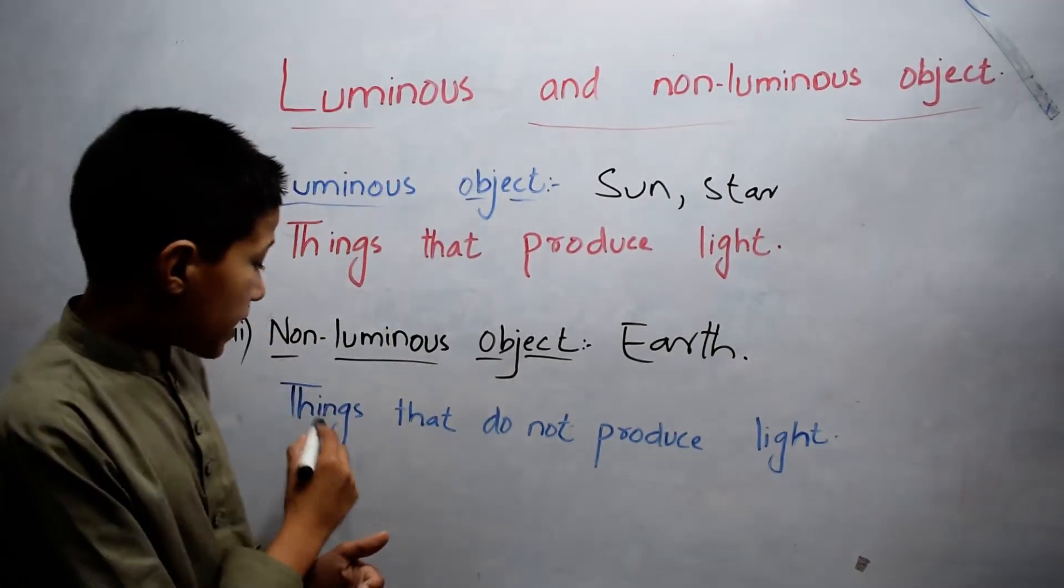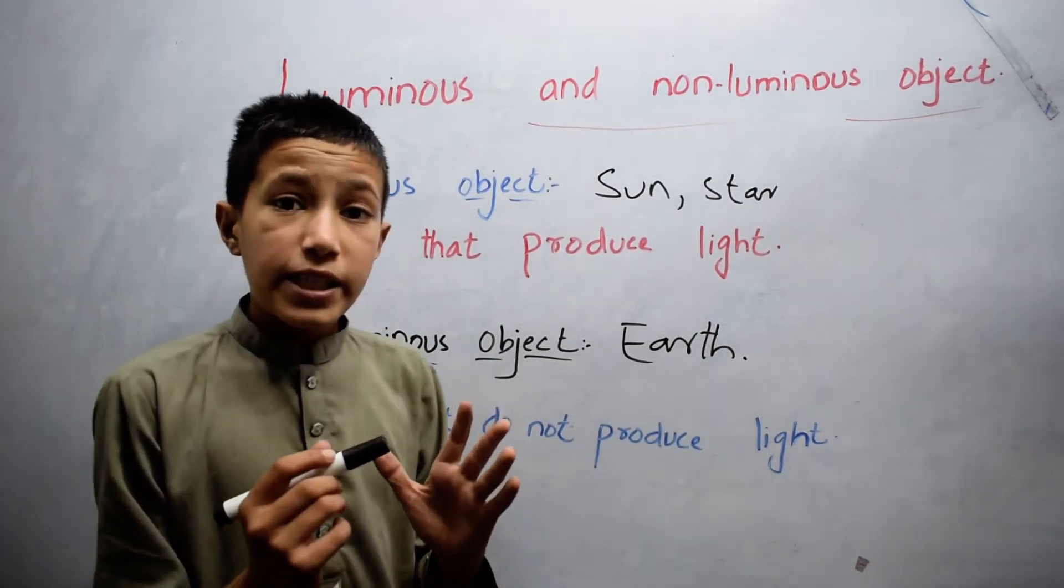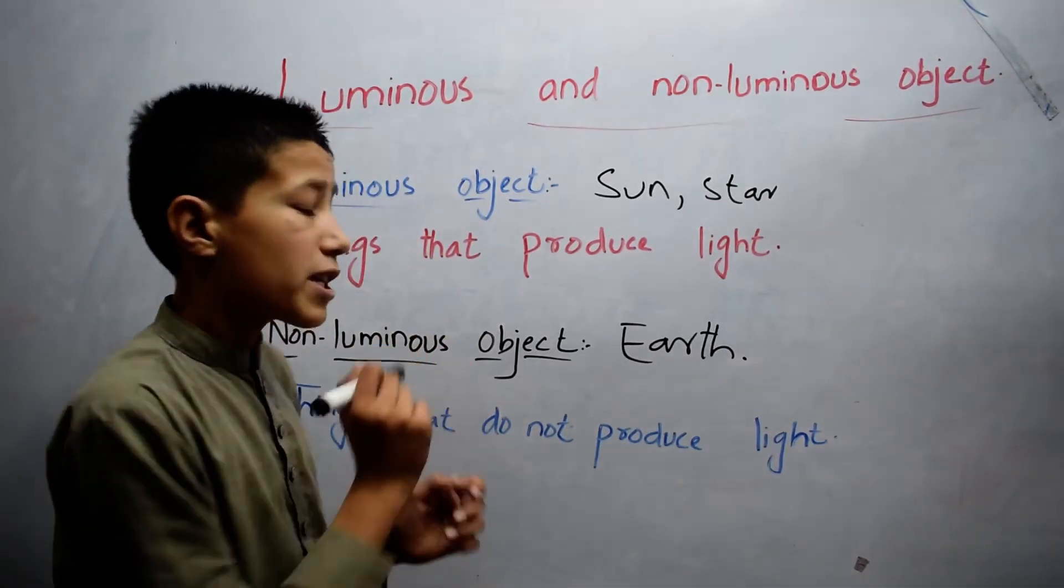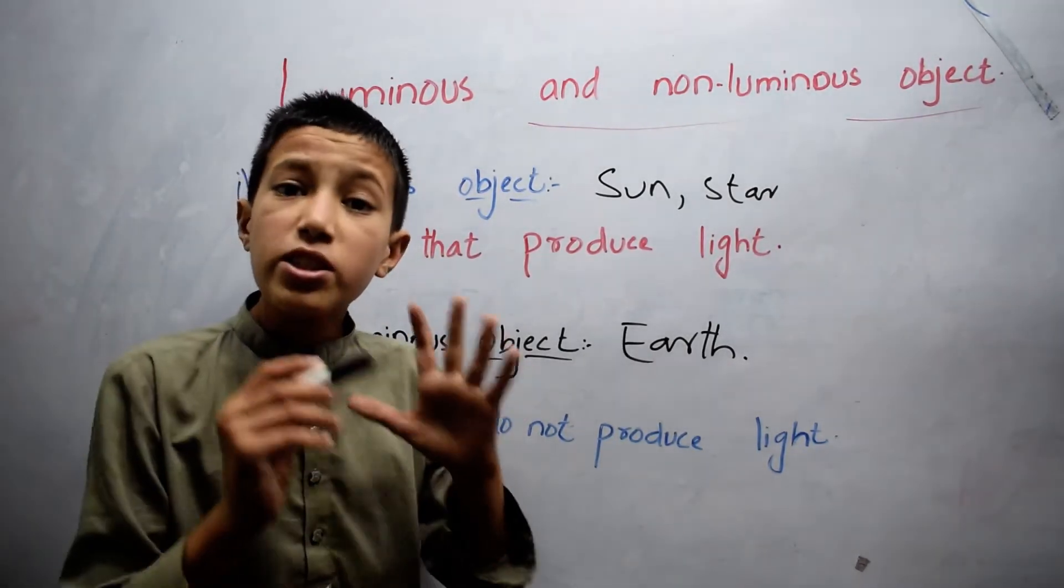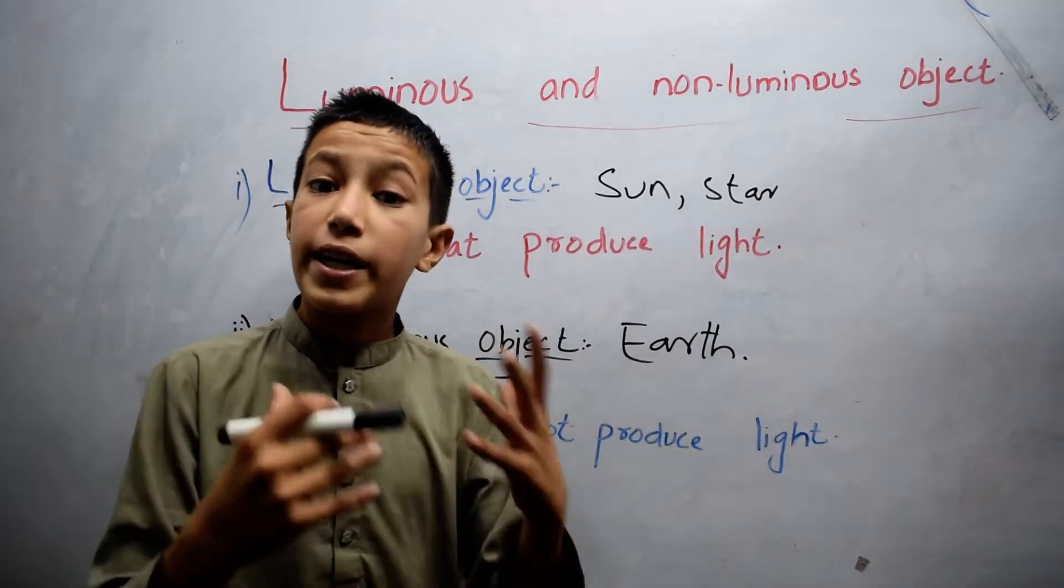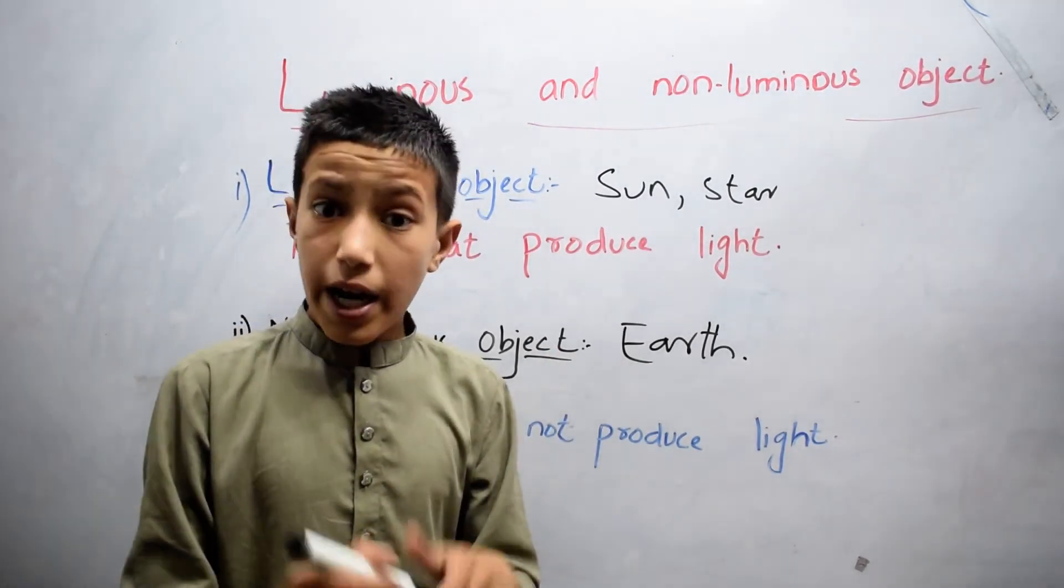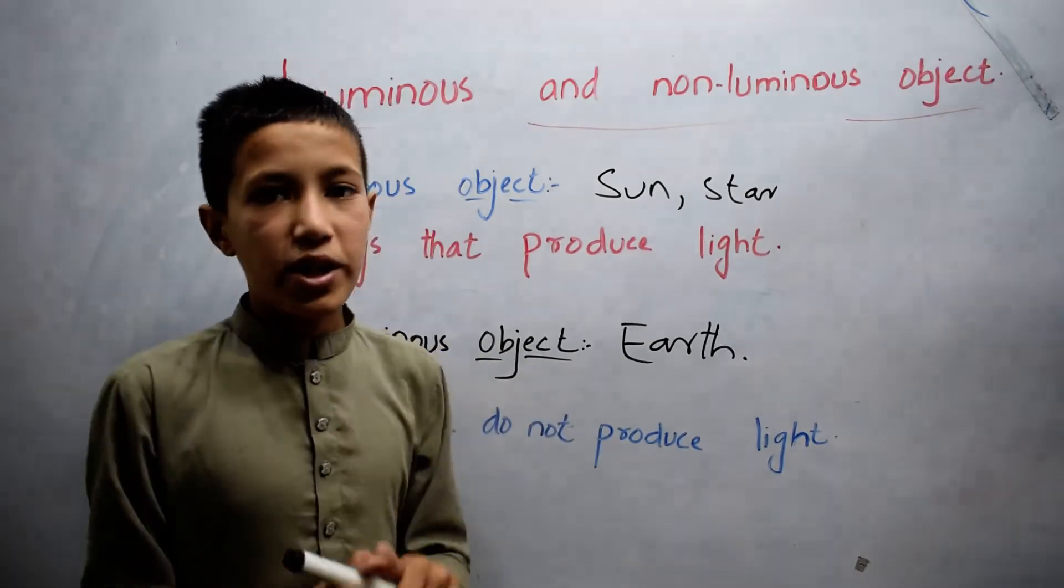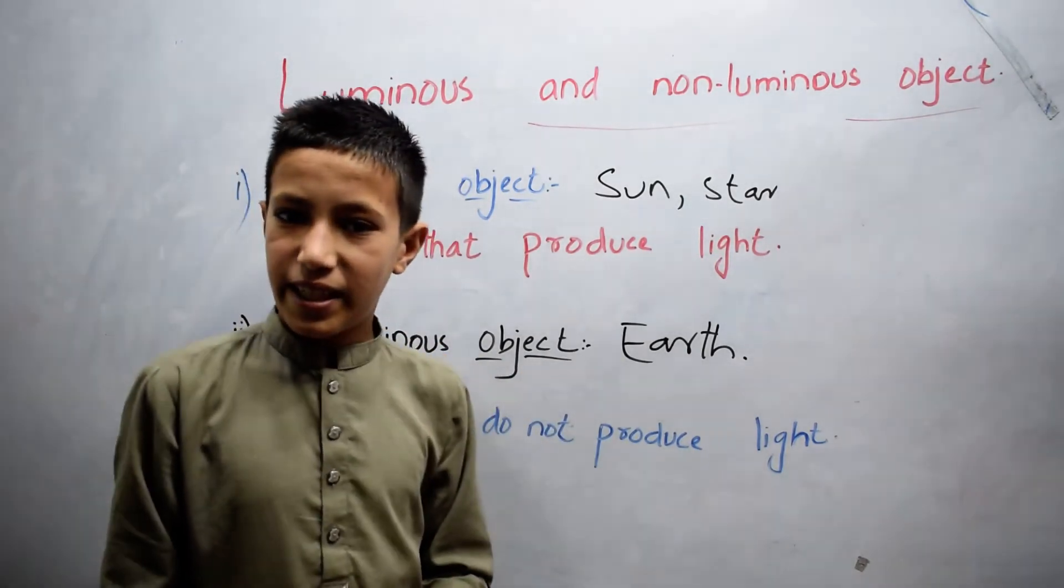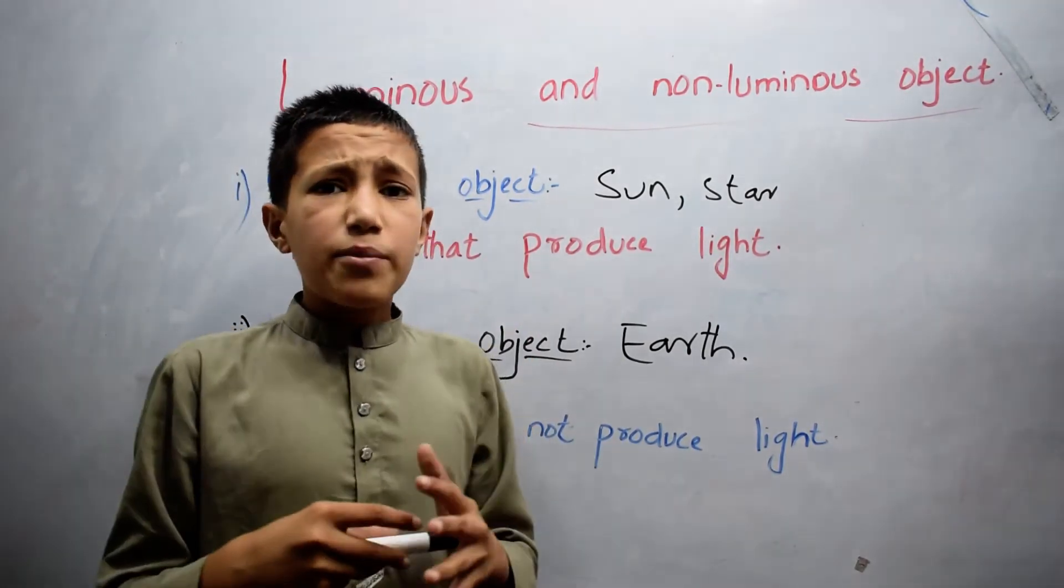Things that do not produce light and only reflect light received from luminous bodies are called non-luminous objects.